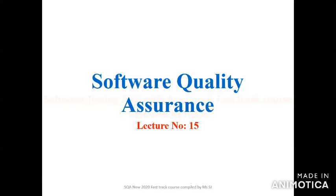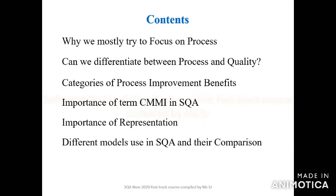Software Quality Assurance, Lecture No. 15. The content we will be covering in this lecture are: why we mostly try to focus on process, then we differentiate between process and quality, and third, categories of process improvement and benefits.